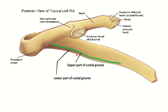The costal groove can be divided into a lower part and an upper part. From the ridge, or upper part, the innermost intercostal muscle is attached, and in the lower part, the internal intercostal muscle is attached.